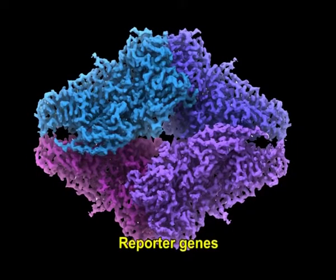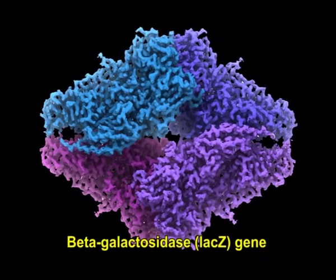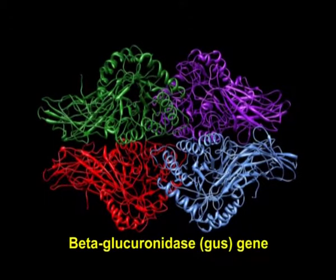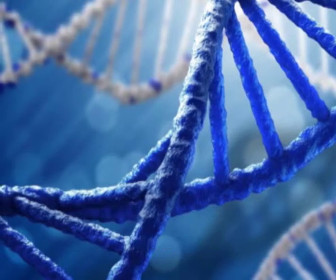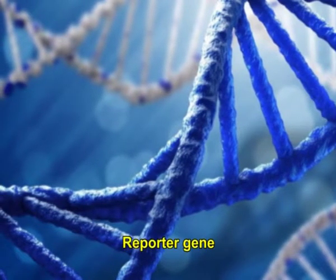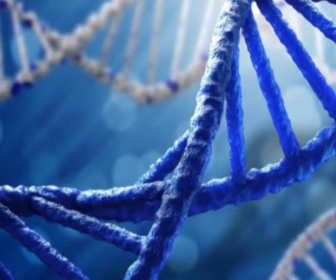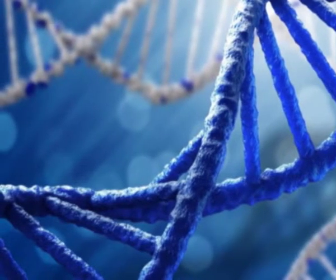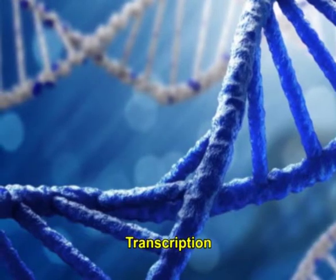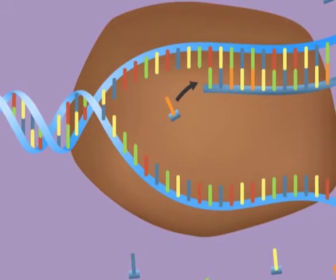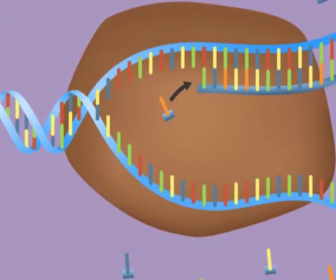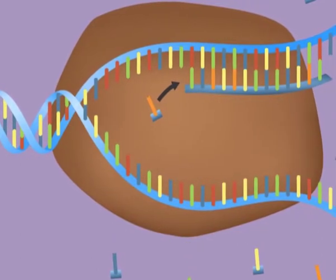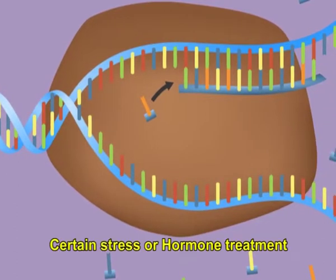Two examples of these reporter genes are the beta-galactosidase lacZ gene and beta-glucuronidase GUS gene. When the reporter gene is bonded to the promoter of the desired gene, the reporter gene will be expressed only at the times and locations wherever that gene is expressed, as the promoter determines transcription. This offers a technique to identify very restricted expression of a gene, such as in small patches of cells like root tips or pollen, or at particular times such as after a certain stress or hormone treatment.